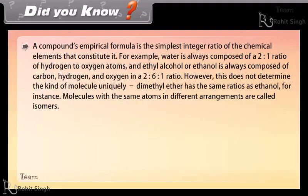A compound's empirical formula is the simplest integer ratio of the chemical elements that constitute it. For example, water is always composed of a 2:1 ratio of hydrogen to oxygen atoms, and ethyl alcohol or ethanol is always composed of carbon, hydrogen, and oxygen in a 2:6:1 ratio.